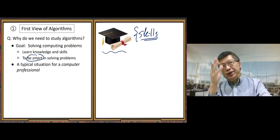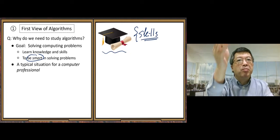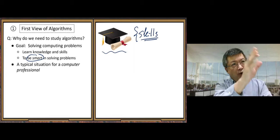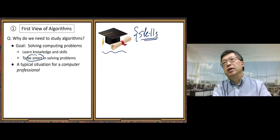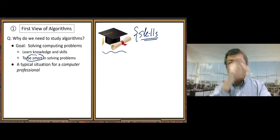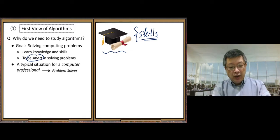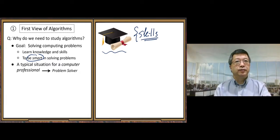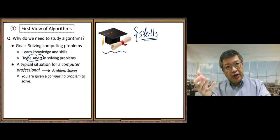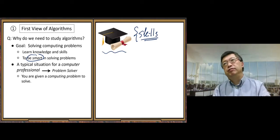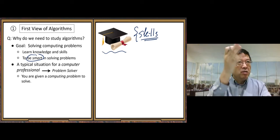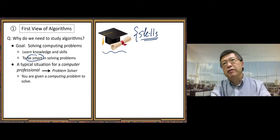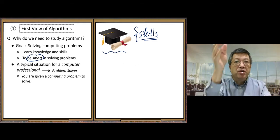So then, I want to look from this angle. A typical situation for a computer professional. You will be a computing professional. So if you come to this class, then your career direction, computer professional. To be a computer professional, you're supposed to be a problem solver. Computing problem solver. So you need to solve many real world computing problems. So here, let me describe the typical situation. You are given a computing problem to solve. So that's your business. So that's the business your company get from the customers. So you need to do the job. Solving a computing problem.